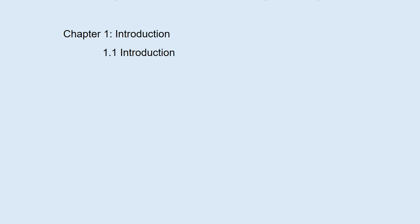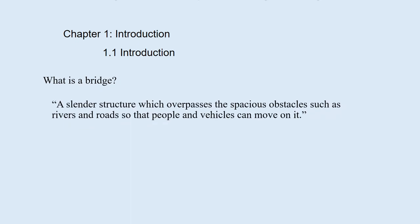Chapter 1: Introduction. First question: What is a bridge? It is not easy to answer, but its definition can be: a slender structure which overpasses spacious obstacles, such as rivers and roads, so that people and vehicles can move on it.